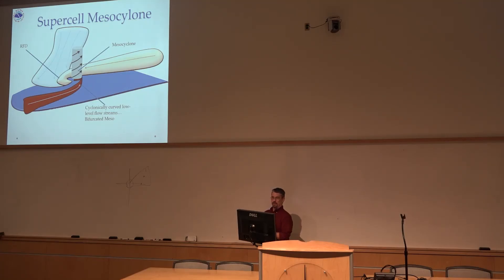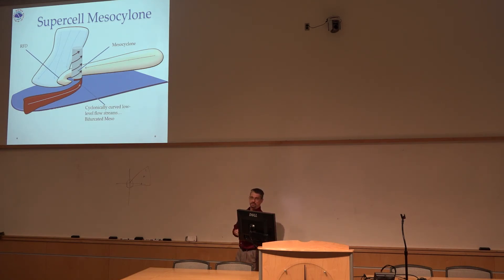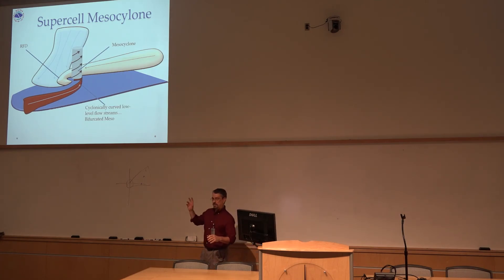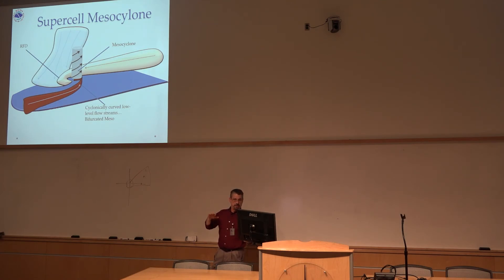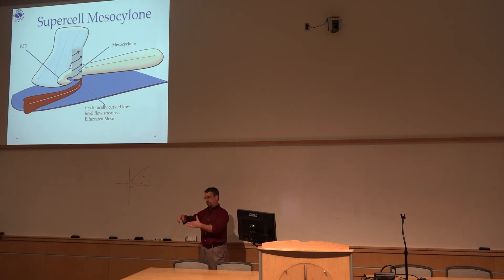In general, the supercell mesocyclones fit this diagram which goes all the way back to a Lemon and Dosswell paper from the late 70s. It talks about a mesocyclone in the mid-levels that is more of a traditional Rankine-type solid body vortex rotating up there, but down in the low levels it's more of a bifurcated situation where you've got inflow coming in and wrapping around while you have RFD things wrapping around the other side. The circulation we see down low is actually the two airstreams passing each other.